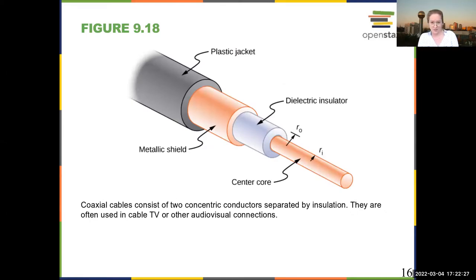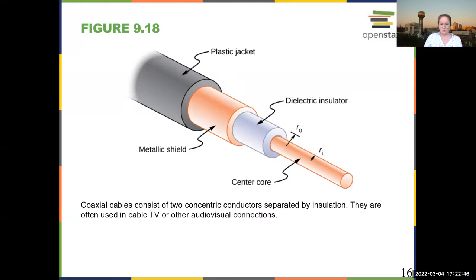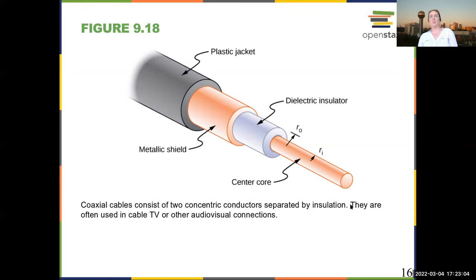You've undoubtedly seen this — although maybe you've never seen a coaxial cable if you don't have cable TV. Coaxial cables are often used to transmit electrical signals because they suppress noise. They consist of a core, followed by an insulator, followed by a metal shield, and then a plastic jacket. In a coaxial cable, the current flows through the center of the wire, though you could also use a couple of different wires.